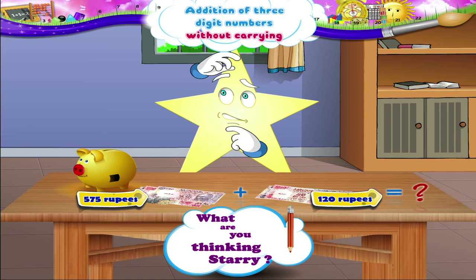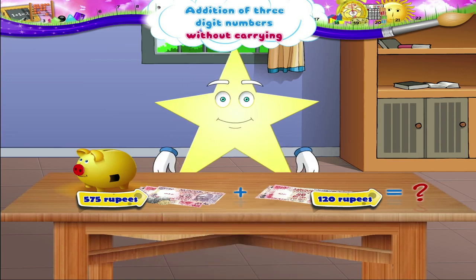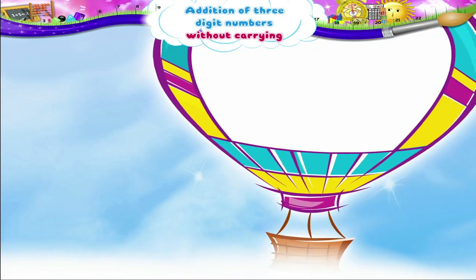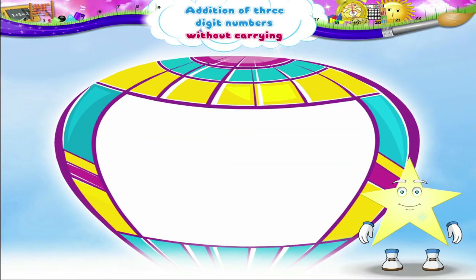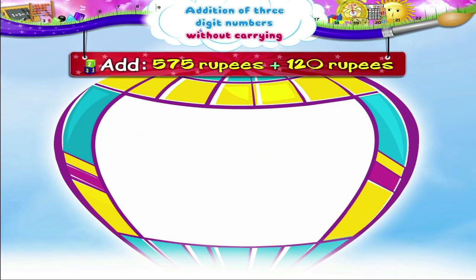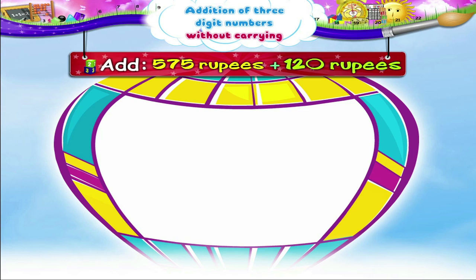What are you thinking, Starry? Oh, you are trying to calculate the total amount in your piggy bank. The addition of three-digit numbers is the same as that of two-digit numbers. Come, let's add 575 rupees and 120 rupees.